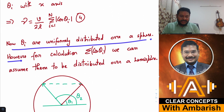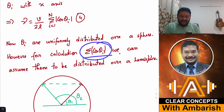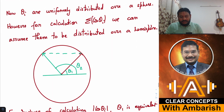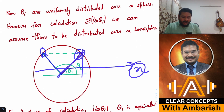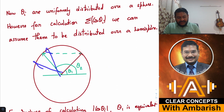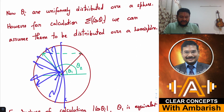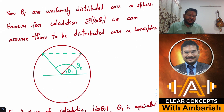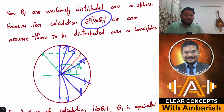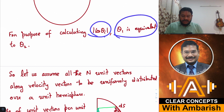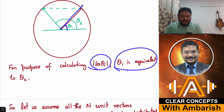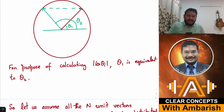For calculating Σ|cos θ_i| we can consider the distribution over a hemisphere rather than a full sphere. If a particle moves toward the left or the right wall, the x-component of speed is the same in magnitude. So we can reflect all velocity vectors from the left hemisphere into the right hemisphere without affecting the calculation. I'll assume all velocity vectors are distributed over the right hemisphere.